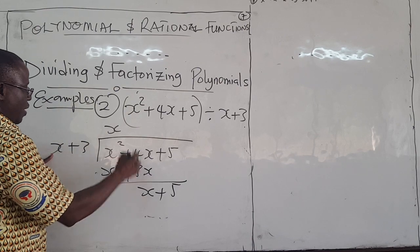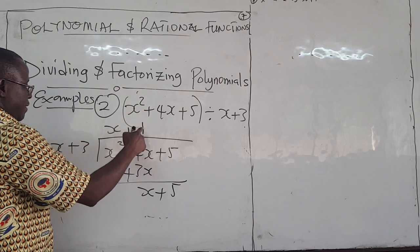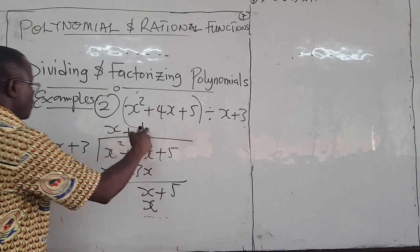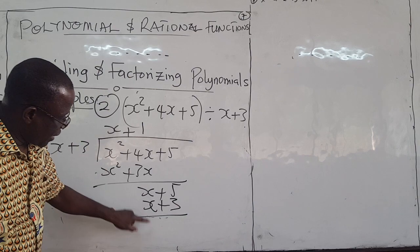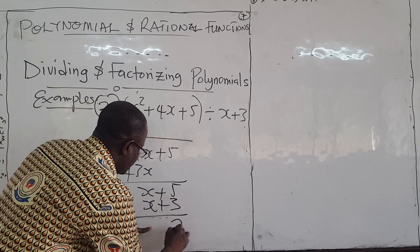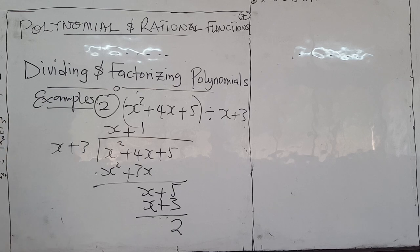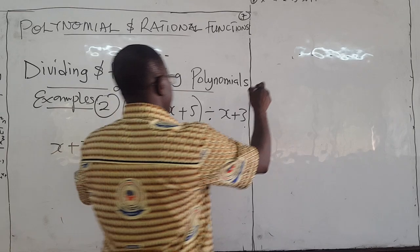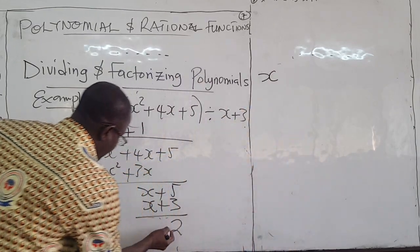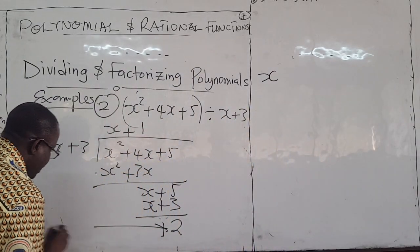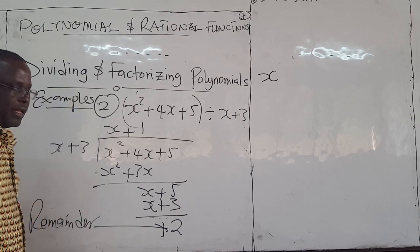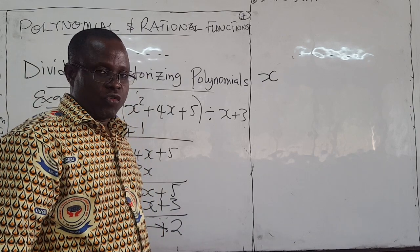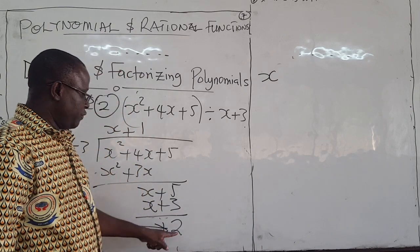Then, again, x goes into x, 1. So, I have plus 1 here. Then, 1 times x is x. 1 times 3 is 3. So, now, if I subtract again, 0 here. 5 minus 3 is 2. So, now, I have a remainder. Which means that if you divide, so, this is called a remainder term. That's a remainder.